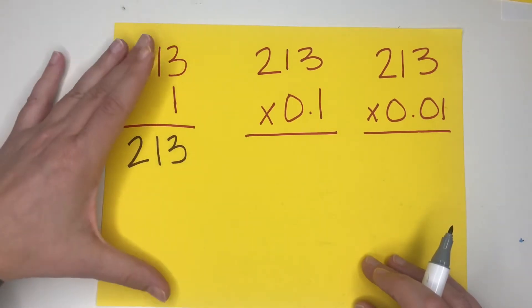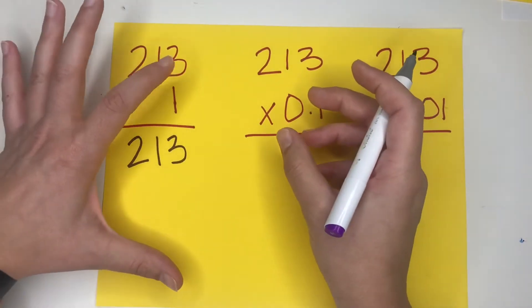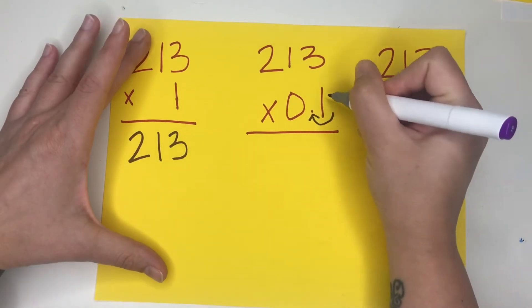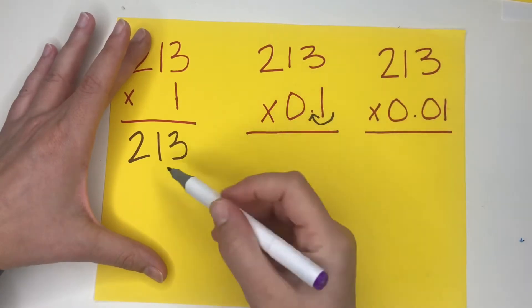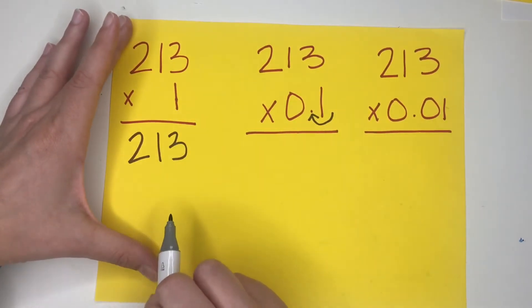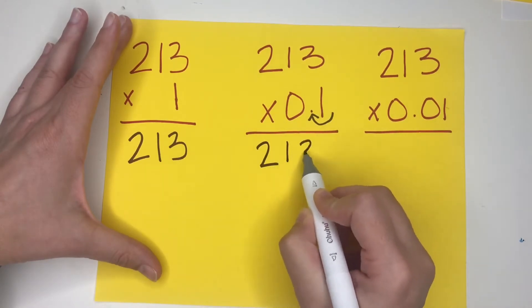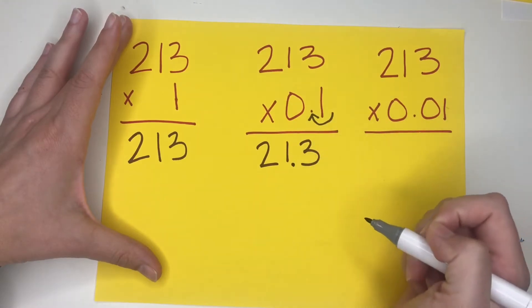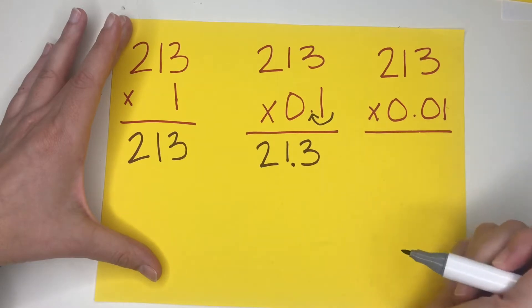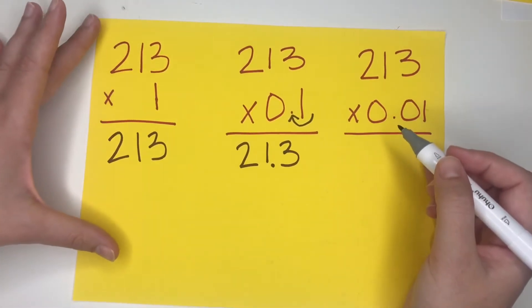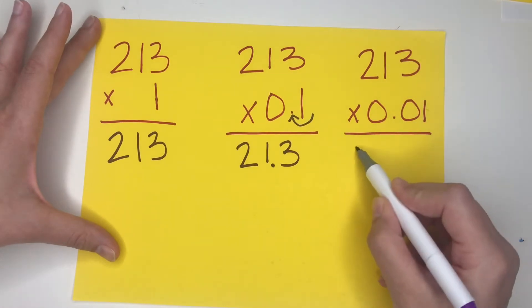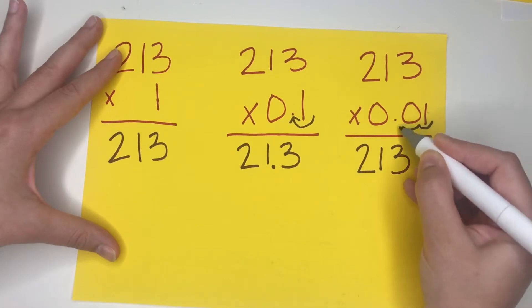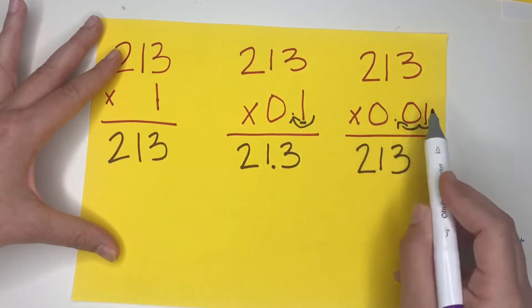So we have 213. But now we're going to be multiplying by a decimal. Yesterday we started multiplying by decimals and we learned the hop — we hop in, and whatever the decimal place we have is the decimal place we will have in our answer. So if 213 times 1 is 213, we're going to add hops — one for each decimal place. A decimal place is any place after the decimal.